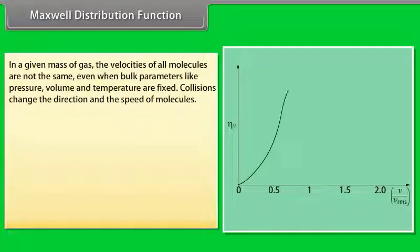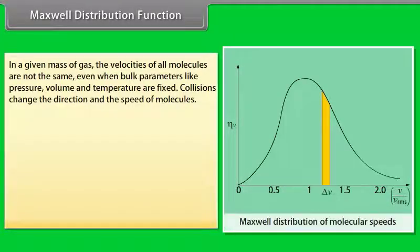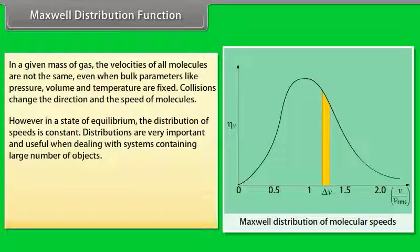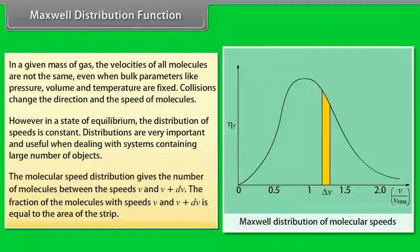In a given mass of gas, the velocities of all molecules are not the same even when bulk parameters like pressure, volume and temperature are fixed. Collisions change the direction and the speed of molecules. However, in a state of equilibrium, the distribution of speed is constant. Distributions are very important and useful when dealing with system containing large number of objects. The molecular speed distribution gives the number of molecules between the speeds V and V plus DV. The fraction of the molecules with speeds V and V plus DV is equal to the area of the strip.